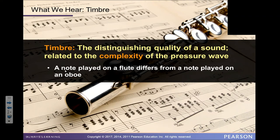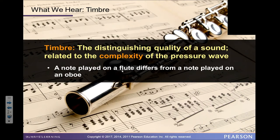They give the example of a note played on a flute differing from a note played on an oboe — the flute is a simpler sound, and the oboe is a more complicated sound.